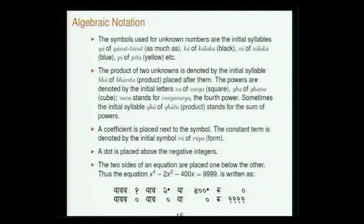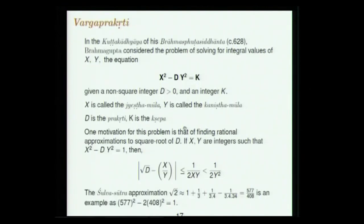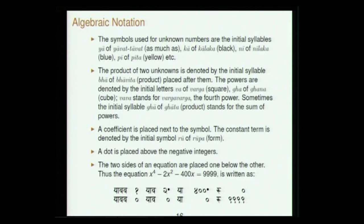This kind of notation is clearly present in Bhaskara's commentary Vasanabharshi and was well established by 1150 in Indian algebra. Ru (Rupa) is the constant term — 9999 is ru 9999, meaning it is a known number. Rupa is that which is visible directly as a number, whereas yaa is something unknown — avyakta — while rupa is vyakta.